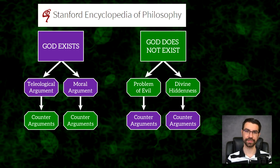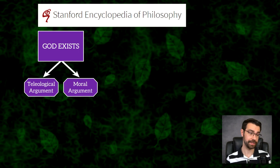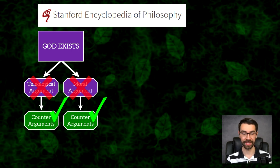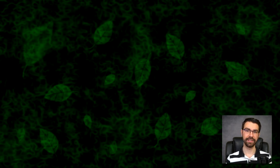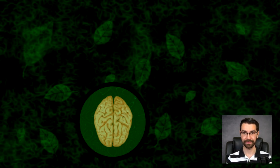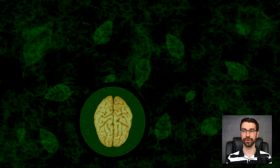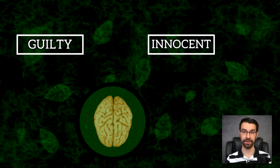It's the conclusion a person would draw by being aware of the pro-God arguments and discounting them. It is the proposition that there is insufficient evidence to support the particular God claim in question. To show what I mean, let's look at the Stanford Encyclopedia's framework when it comes to the claim that we are brains in vats.